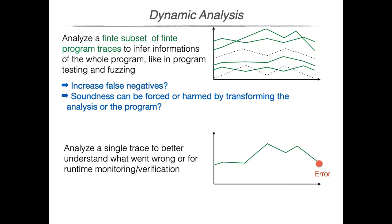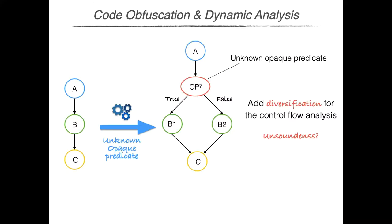Then there are other dynamic techniques that focus on a single execution trace for better understanding what went wrong. For example, dynamic slicing can be used to analyze the statements that actually affected an execution that led to an error state, previously identified by testing or debugging. For this class of analysis, we don't yet know what it means to complicate them. For this reason, we start by considering the first class of dynamic analysis techniques.